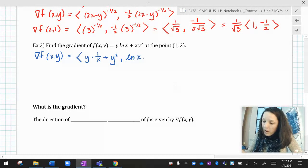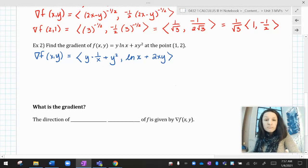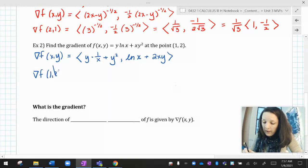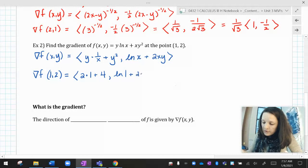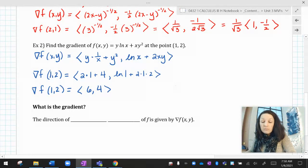And now the derivative with respect to y is going to be ln x plus 2xy. Okay, I'm supposed to evaluate that at the point 1, 2. So the gradient at the point 1, 2 is going to be, let's see, 2 times 1 plus 4. And then ln 1 plus 2 times 1 times 2. So the gradient of f at 1, 2 is going to be 6. ln of 1 is 0, 4. Cool. I mean, okay.